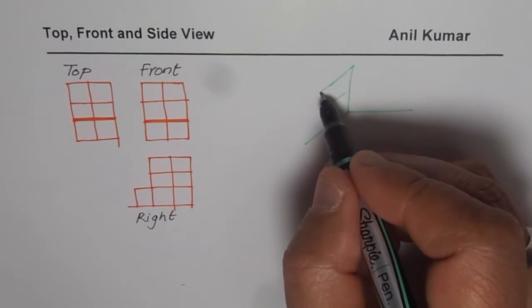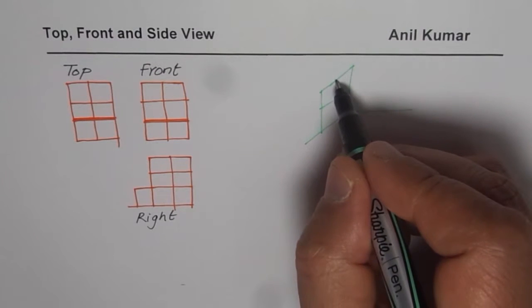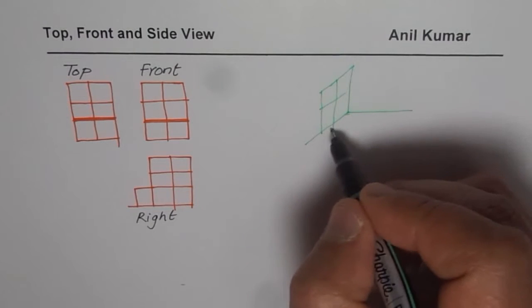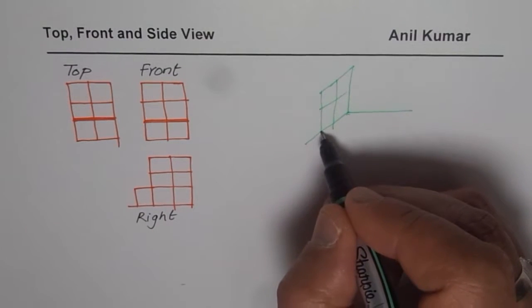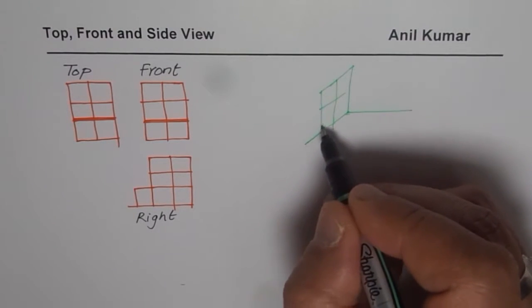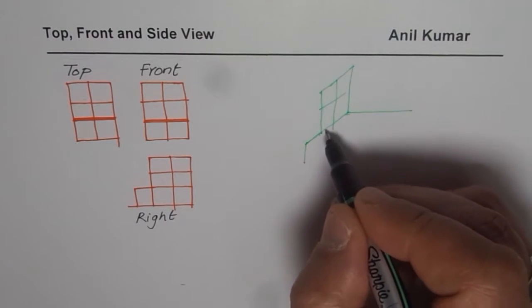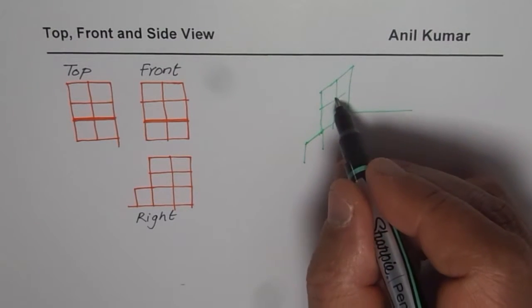And then we can bring it down. That gives us the top portion. Do you see that top portion? So that is what it is. Then we see there is a step. That means step like this. Whenever you are going down, you have to go down in a vertical manner. So bring it down like this.